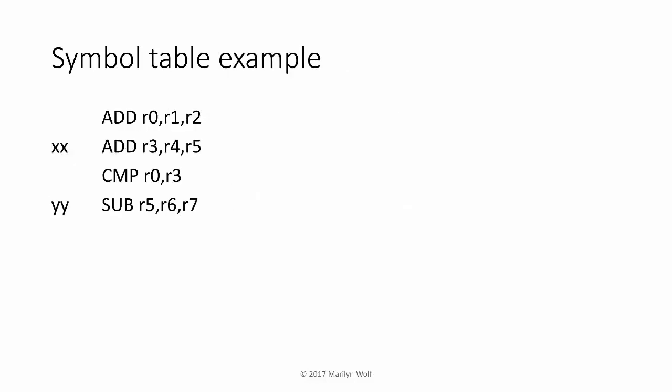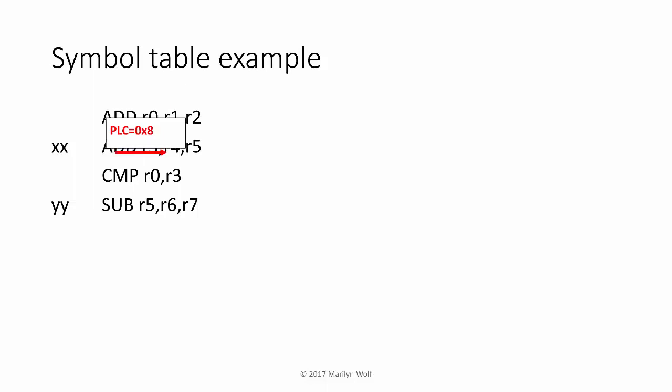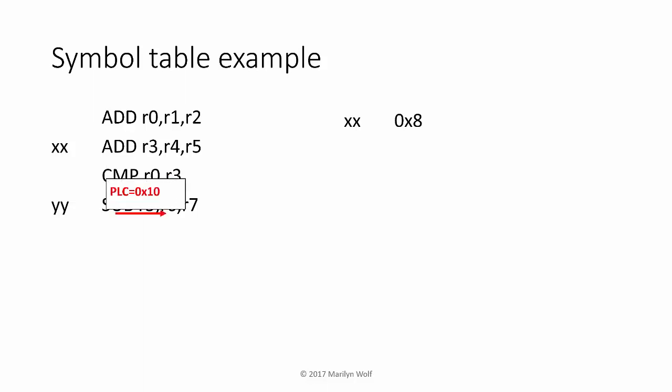Here's a simple example with assembly code containing two labels, XX and YY. The PLC starts at location 7. We assign 8 to the next statement, so XX has a value of 8. We then go to the next statement at location 9, and then to the next at location 10, which gives us the value for label YY.